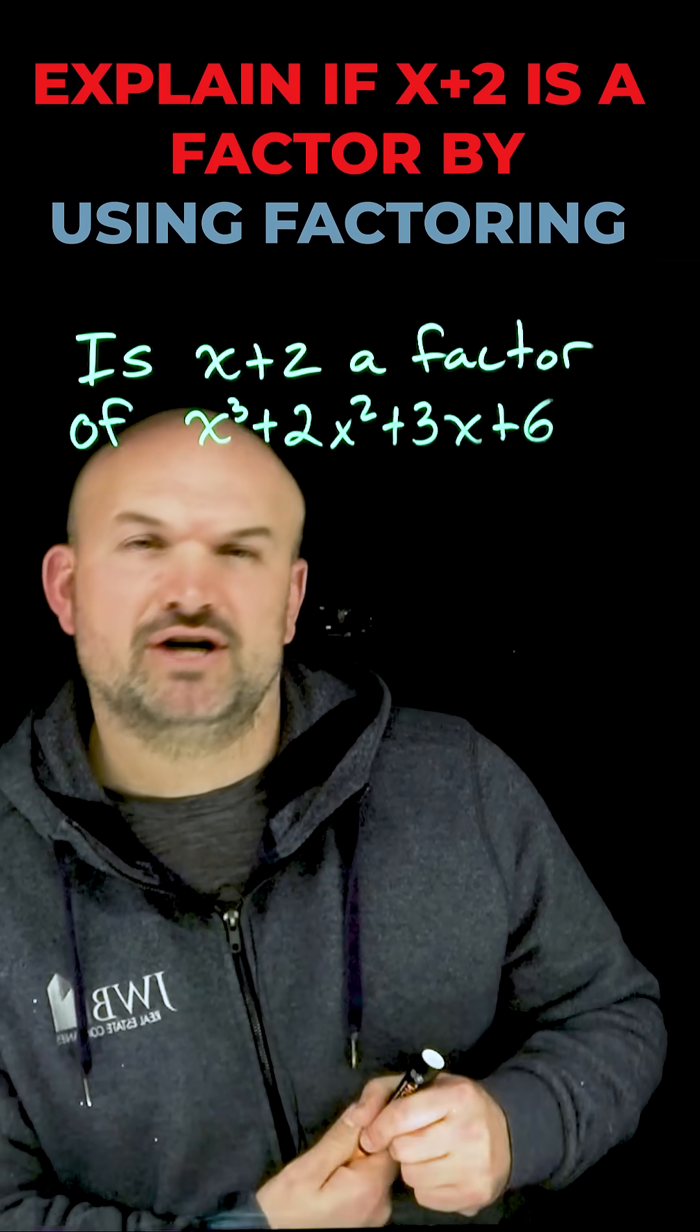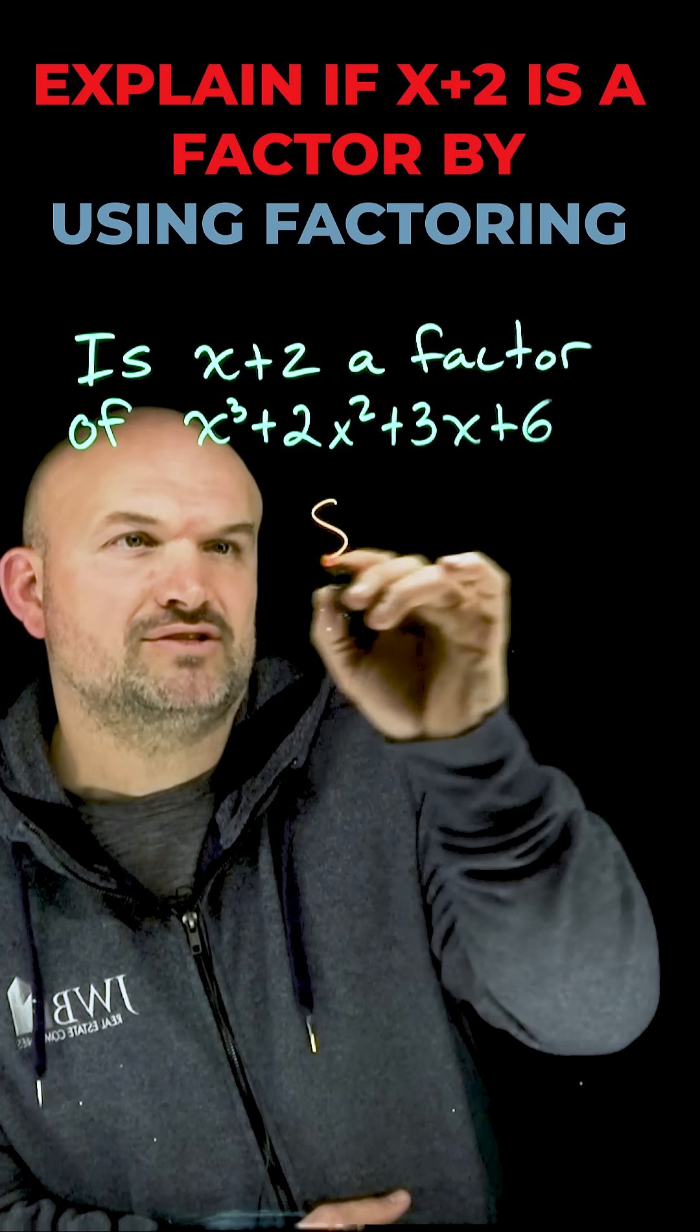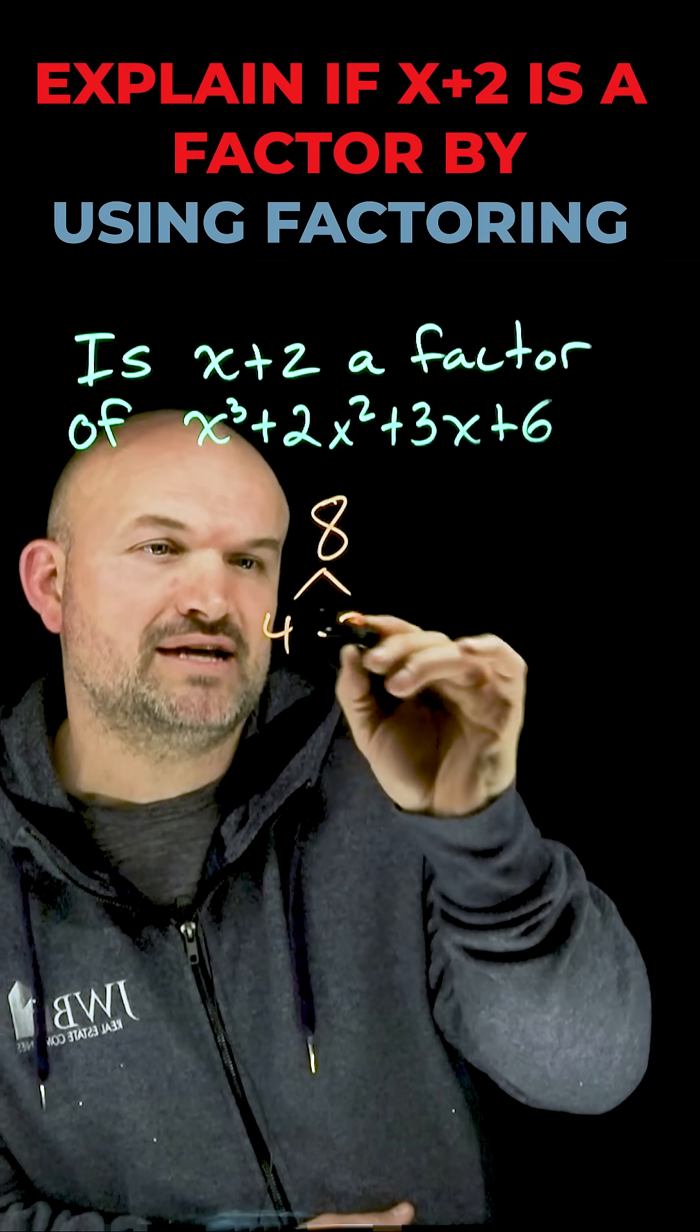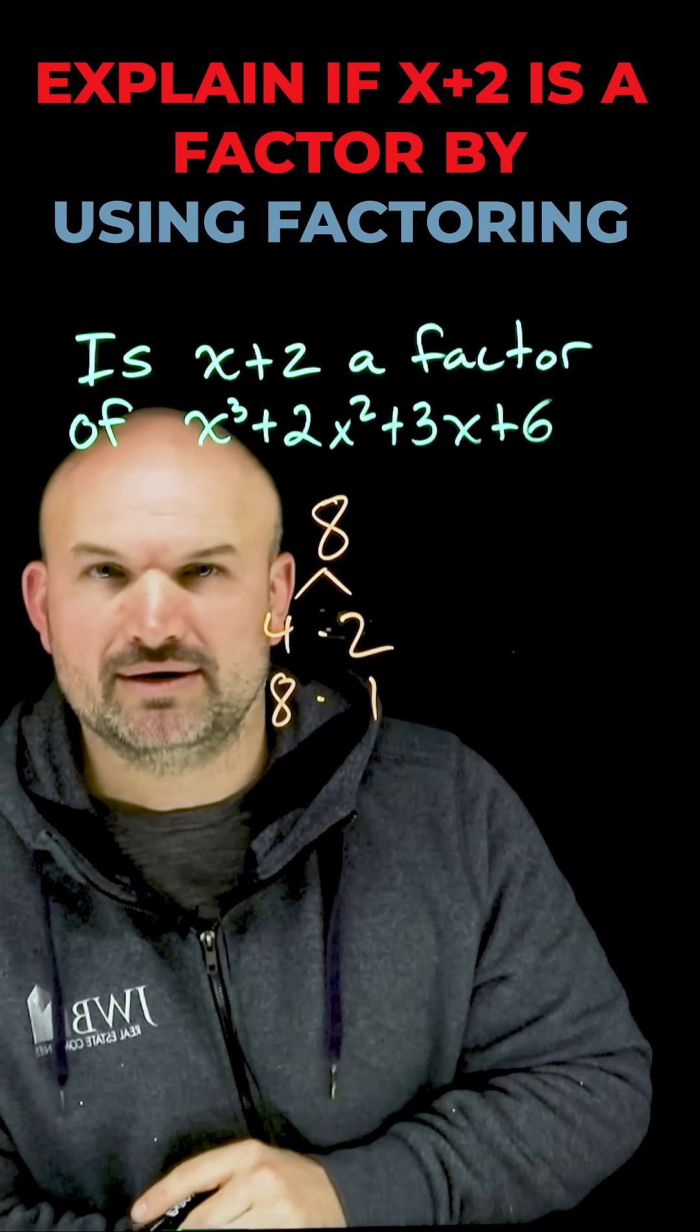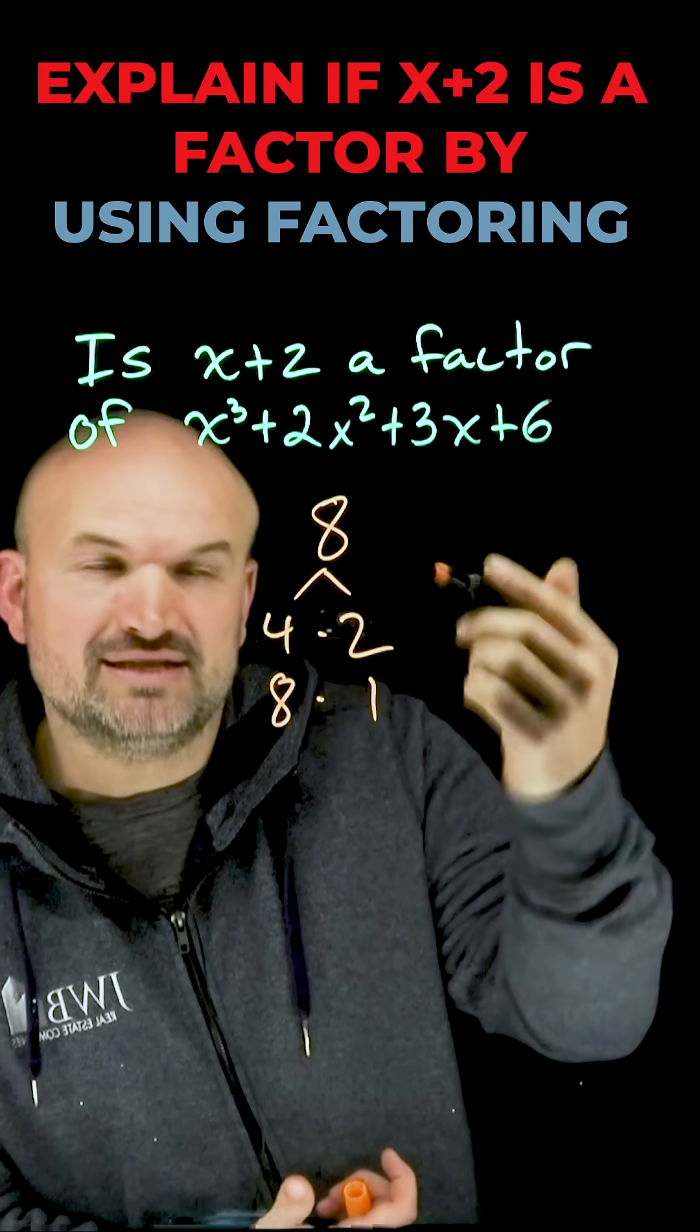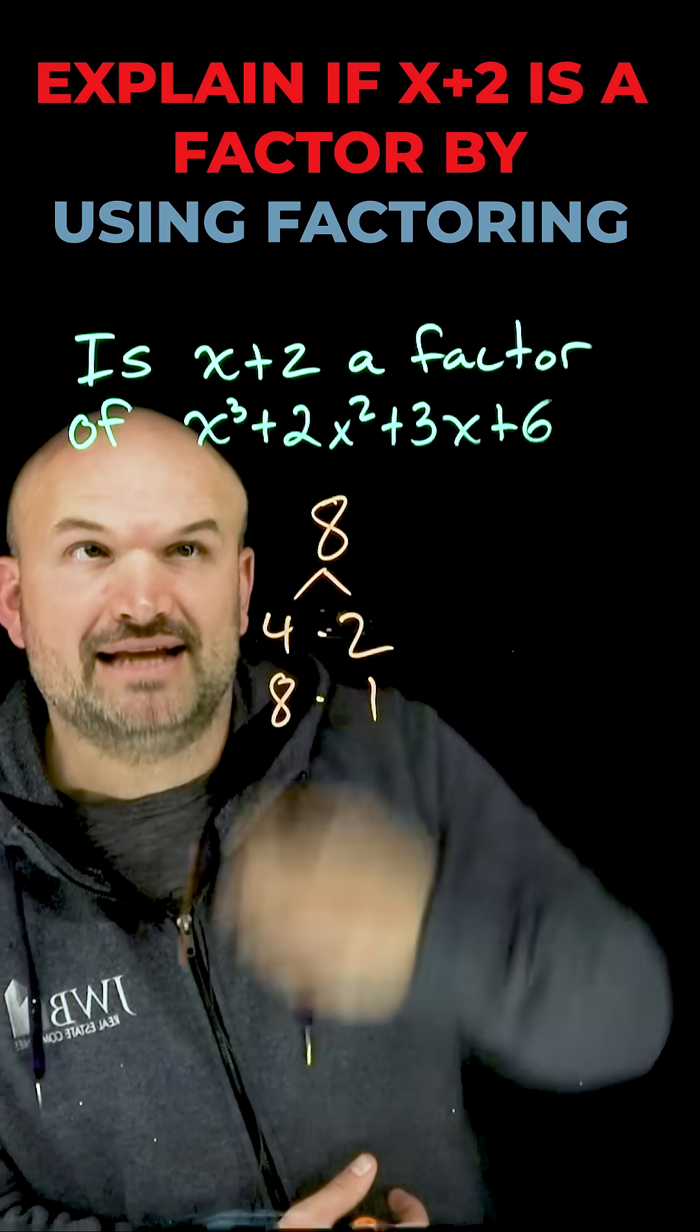An easy way to think about this problem is to understand more about factoring. If I had 8 and said let's factor the number 8, I could do it as 4 times 2 or 8 times 1. The factors of 8 are 1 and 8, and 4 and 2. The product of them will always give us the number 8.